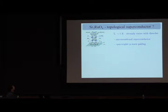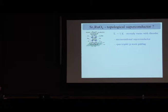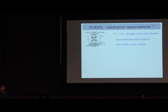Back in 1995, several people proposed that strontium ruthenate has spin-triplet P-wave pairing, and suggested that it might also break time-reversal symmetry. So it is an interesting superconductor which spontaneously breaks not only U(1) symmetry but also time-reversal symmetry — in this sense it is quite unusual.